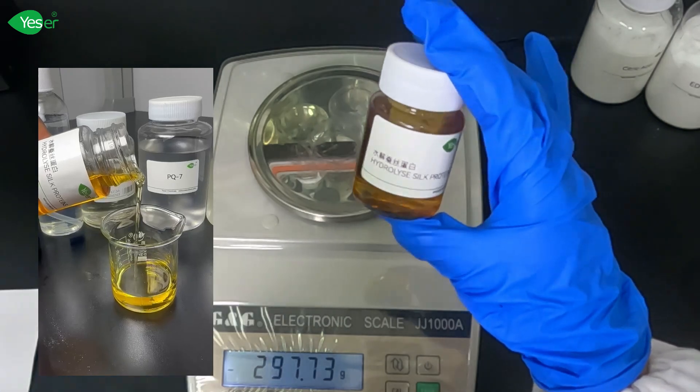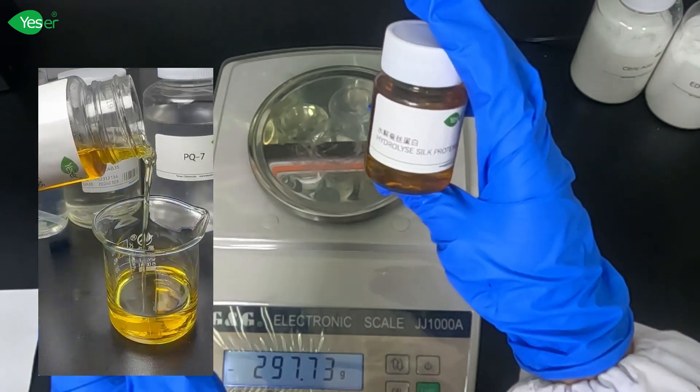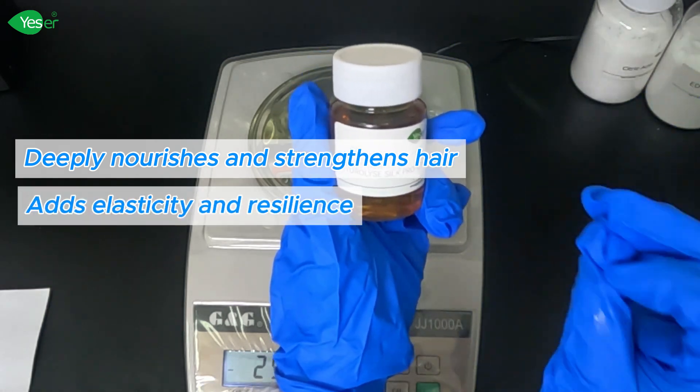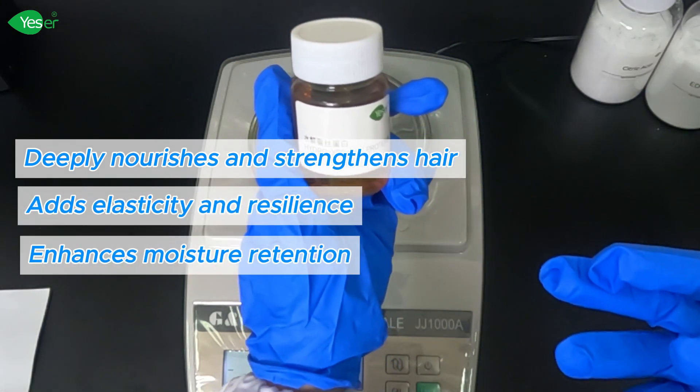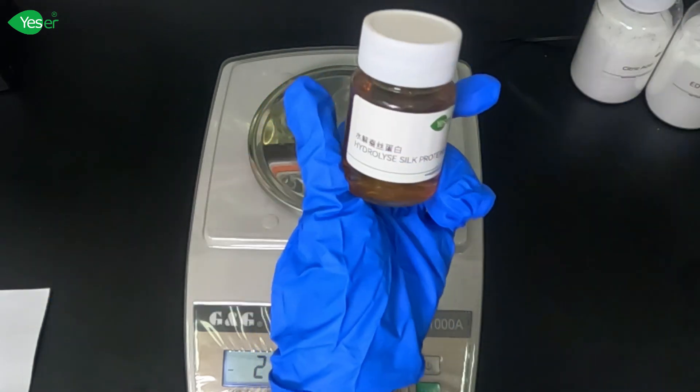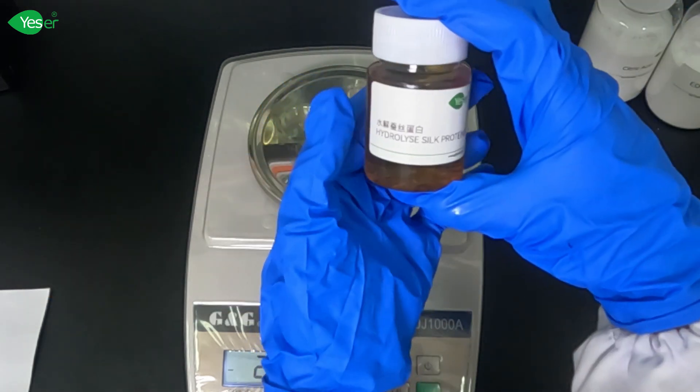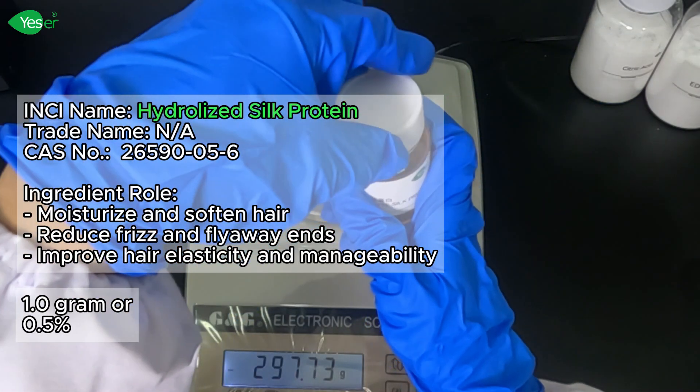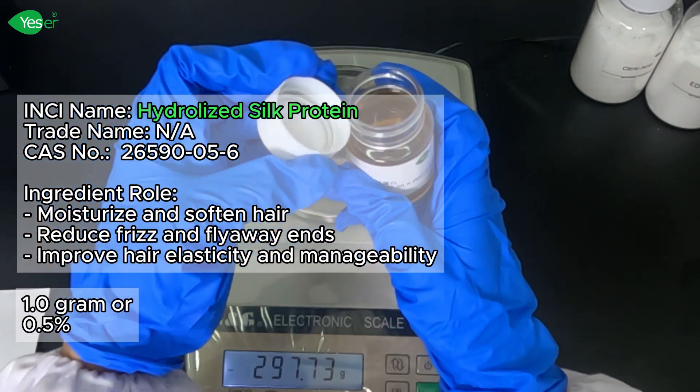The benefits of Hydrolyzed Silk Protein are: deeply nourishes and strengthens the hair, adds elasticity and resilience, enhances moisture retention, and promotes a natural healthy shine. This is perfect for our simple yet effective conditioning and moisturizing shampoo. We're gonna add 1 gram of this, or 0.5% for our formulation.